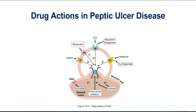In the lumen, we see the site of action for antacids, which very rapidly will neutralize the acid in the stomach. You also have drugs like sucralfate or bismuth, which can coat the surface of the ulcer and aid in the healing of the peptic ulcer.